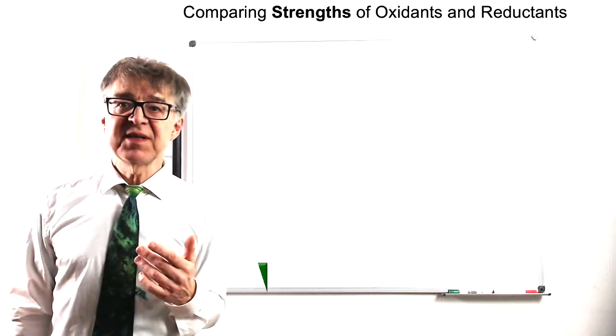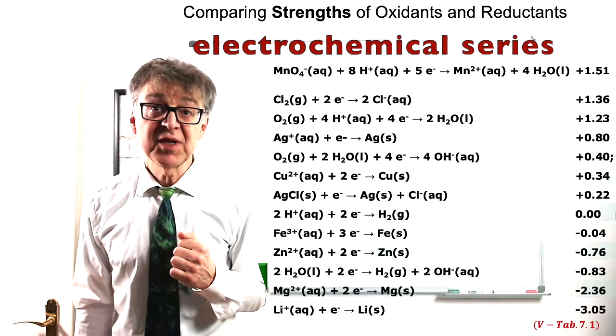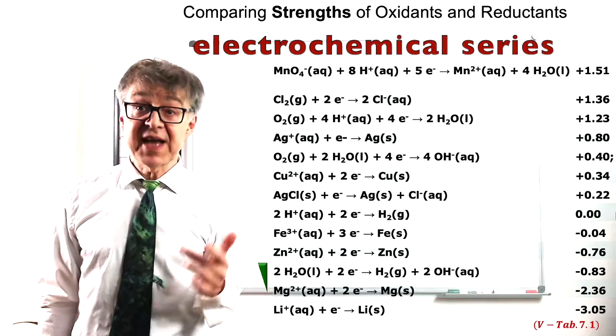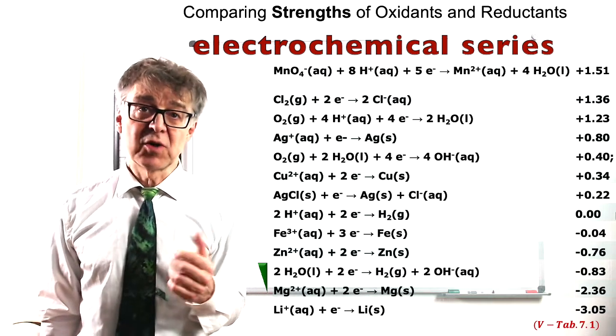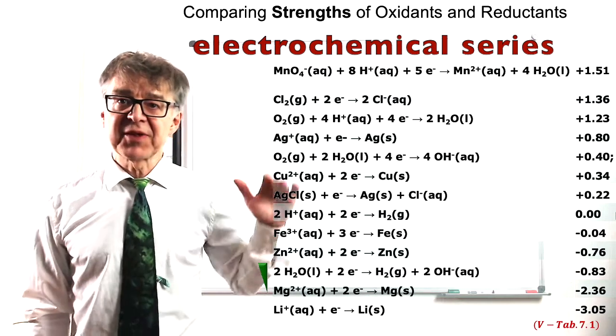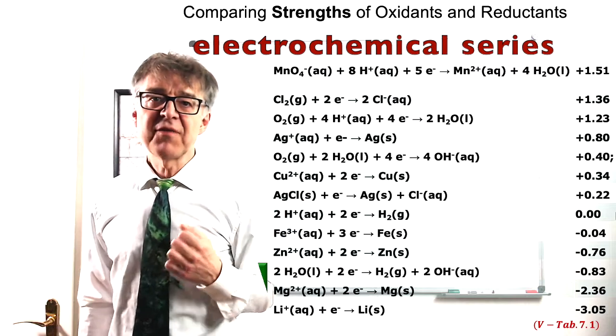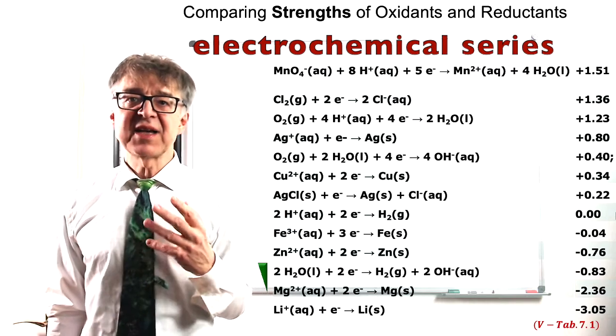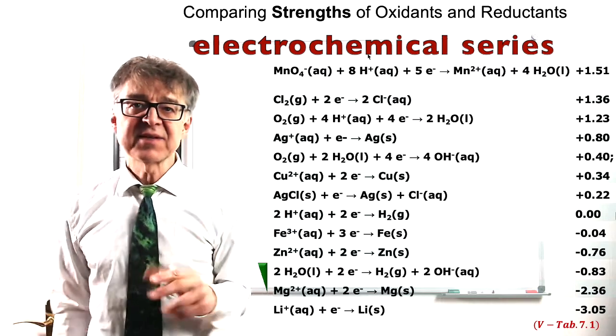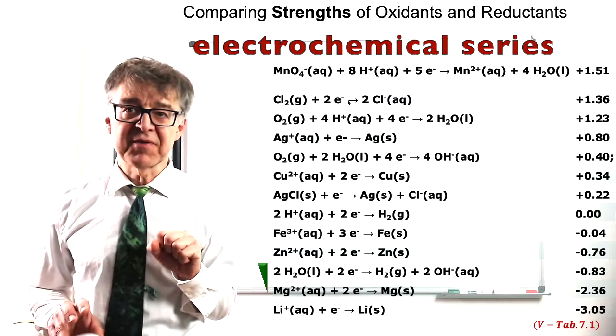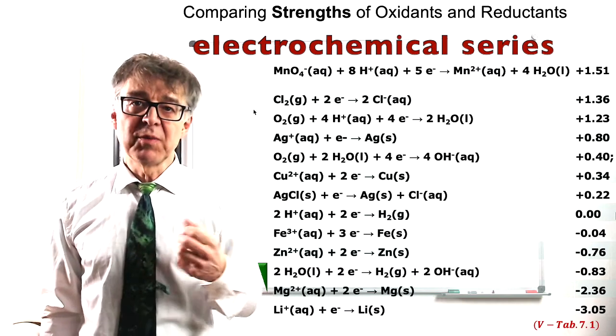The electrochemical series is an arrangement of redox equilibria in order of their standard electrode potentials or redox potentials. At the top of the list, the redox half reactions with the highest electron affinity, the highest hunger for electrons can be found, for example the noble metals.